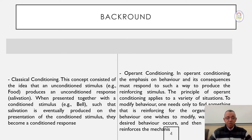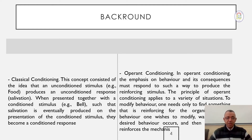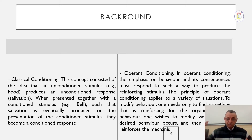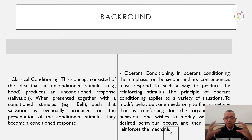Classical conditioning is based on the idea that an unconditioned stimulus — in Pavlov's experiment, the food — produces an unconditioned response: salivation. When the food was presented together with a conditioned stimulus, the bell, salivation was eventually produced on the presentation of the bell alone. We all know this experiment: Pavlov presented meat to the dog while ringing a bell at the same time, but with time he removed the meat and rang only the bell — and the dog still salivated.